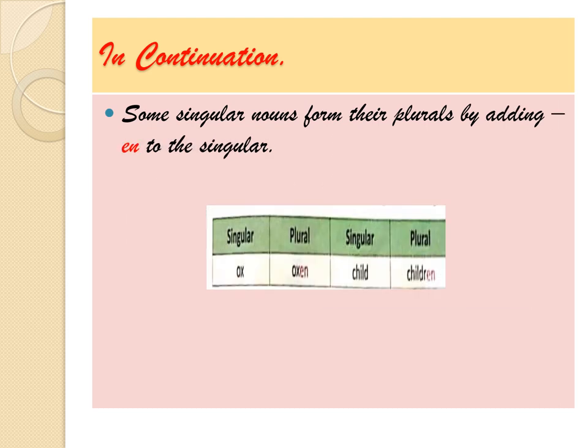Rule seven: some singular nouns form their plural by adding EN to the singular. For example: ox/oxen — ox changes to O-X-E-N. Child/children.